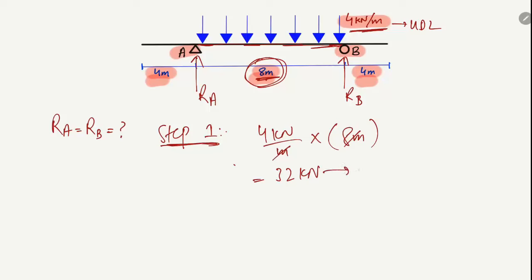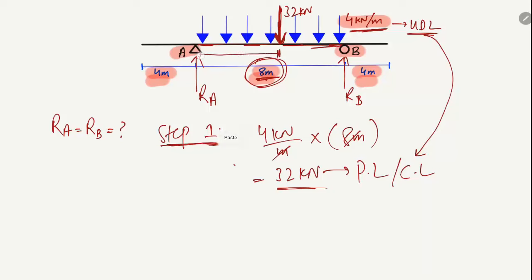This 32 kilonewton is the pointed load or concentrated load. If I represent it here, this 32 kilonewton will act at the center of the loaded span. Before, it was a uniformly distributed load, and we changed it into a pointed or concentrated load which acts at the center — at 4 meters, since the total loaded length was 8 meters.